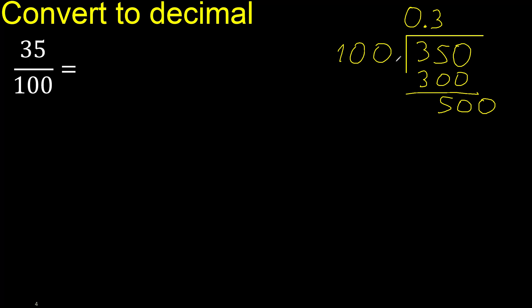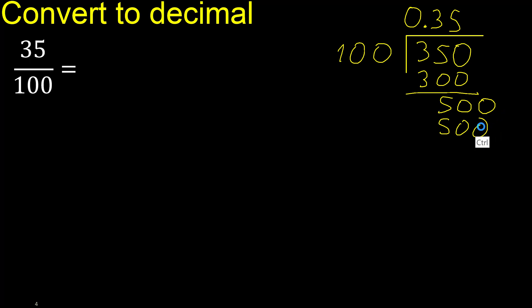Point is here. 100 multiplied by which number? Multiply by 5 is exact — 500 is not greater. Subtract 0. 0, therefore finish.